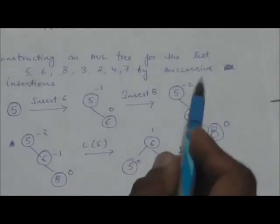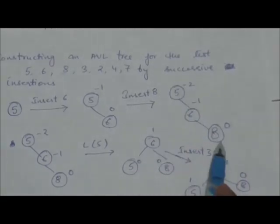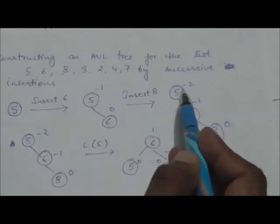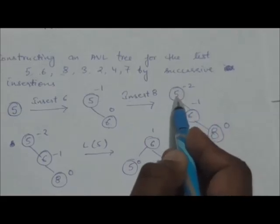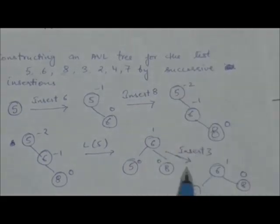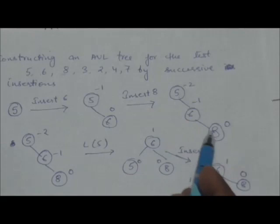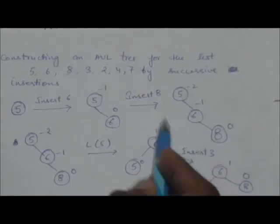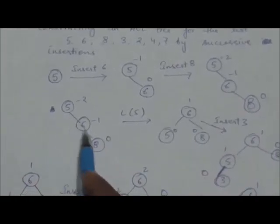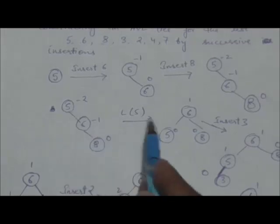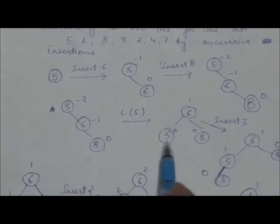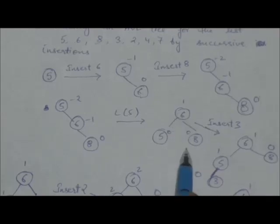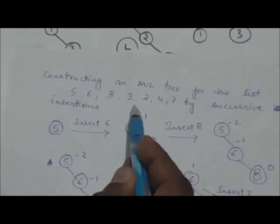This AVL tree is now unbalanced because the balance factor of this node is minus 2. To balance it, we will perform a single left rotation. After performing the single left rotation on this tree, we will get this balanced tree.